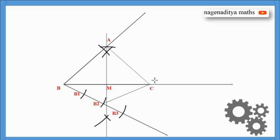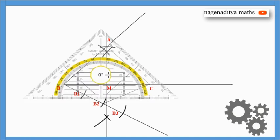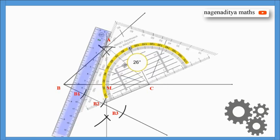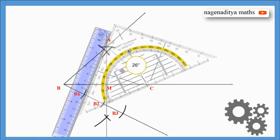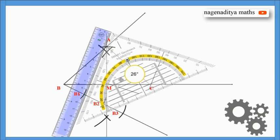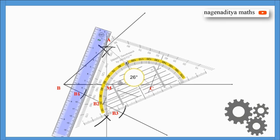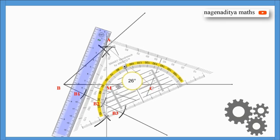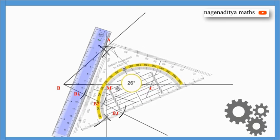Now we have to draw a parallel line to B2C from B3. To draw the parallel lines, we are using set squares and scale. We just drag the set square like this and join the points, and join B3 to extended BC.